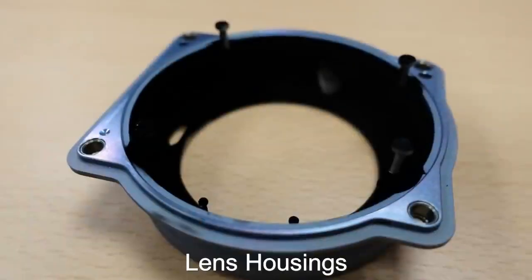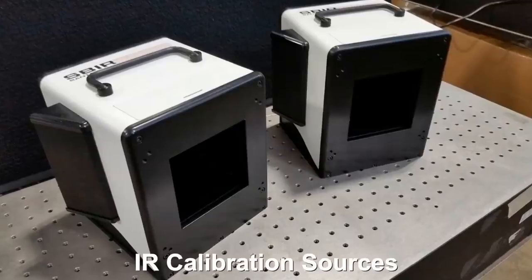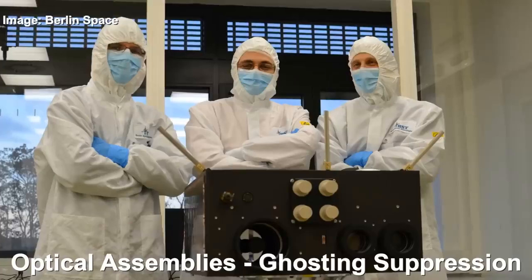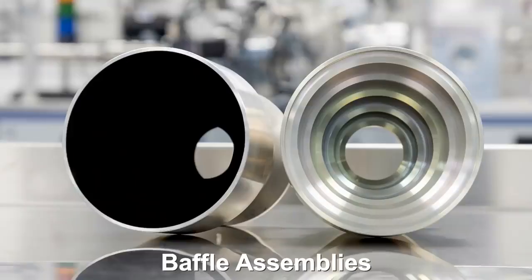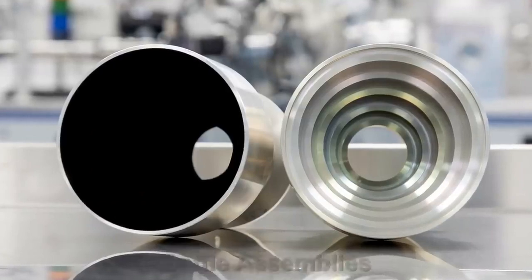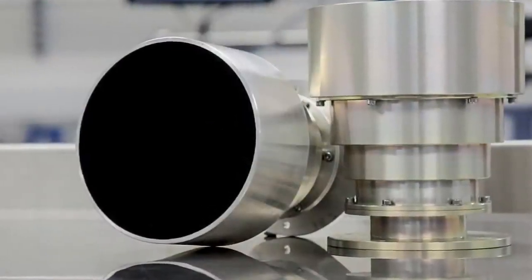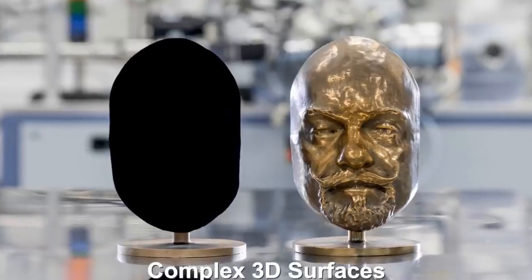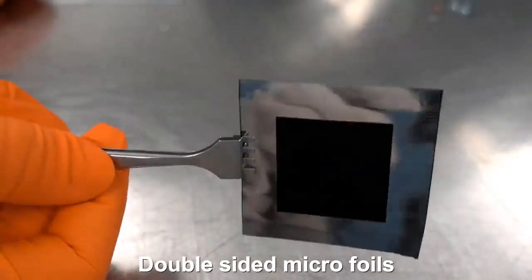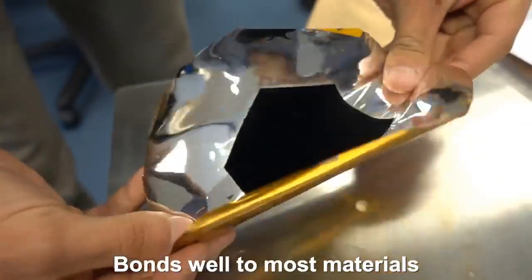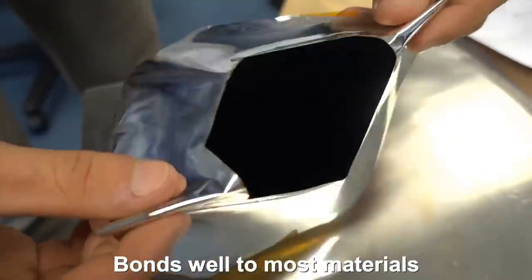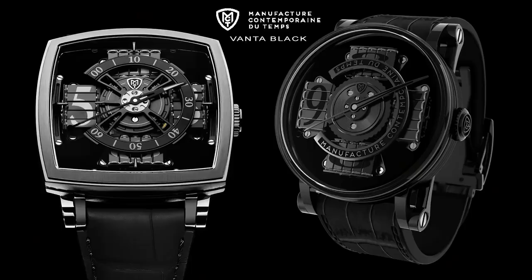Vantablack is designed to reduce unwanted stray light, and is highly desirable in space applications, but can be used in a wide range of other applications, including high-performance infrared cameras, sensors, scientific instruments, satellite-borne calibration sources, star trackers and telescopes, and can even provide a unique aesthetic effect in certain high-end luxury products like watches.